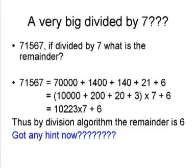Let's see a bigger number. 71,567 is being divided by 7. This can be divided as 70,000 + 1,400 + 140 + 21 + 6 = (10,000 + 200 + 20 + 3) × 7 + 6 = 10,223 × 7 + 6. Thus by the division algorithm, the remainder is 6. Got any clue now?